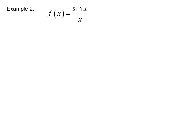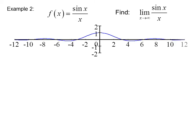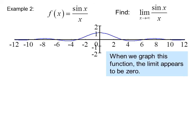Another example: f of x equals sin x over x. Find the limit as x goes to infinity of sin x over x. This is what the graph looks like. We have previously looked at the limit as x goes to 0; now we are looking at the limit as x goes to infinity. When we graph this function, the limit appears to be 0.